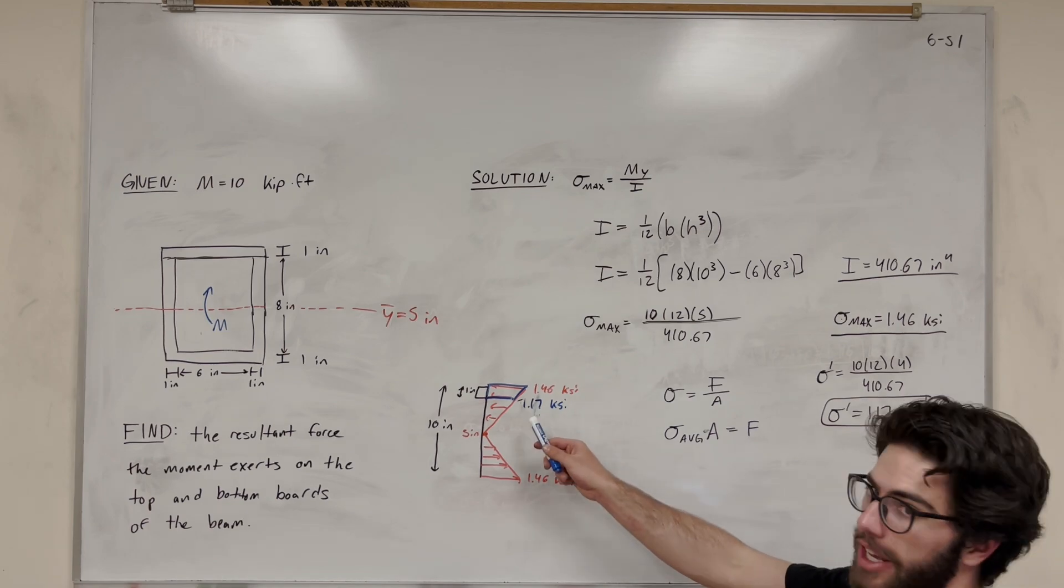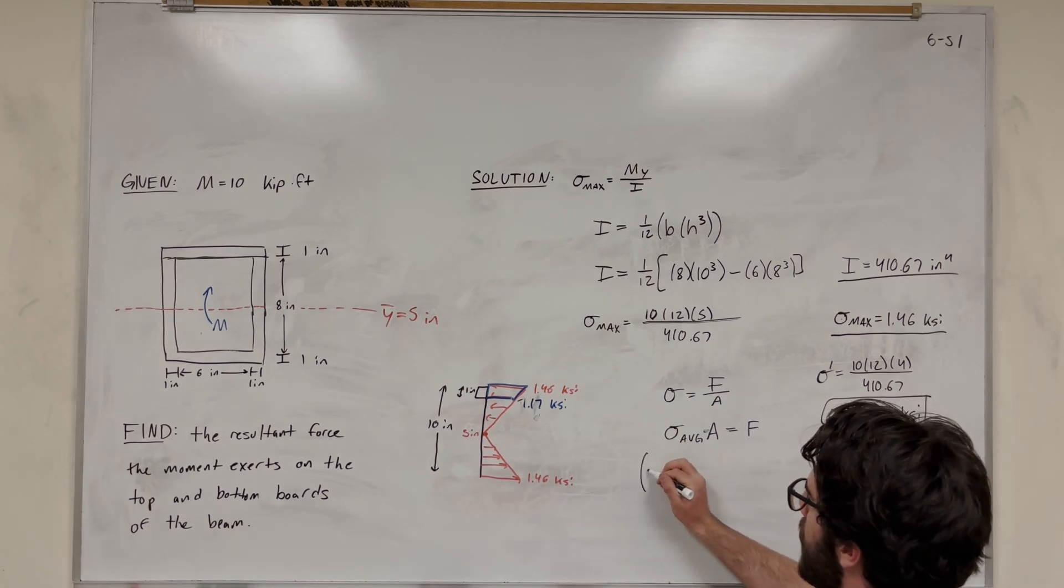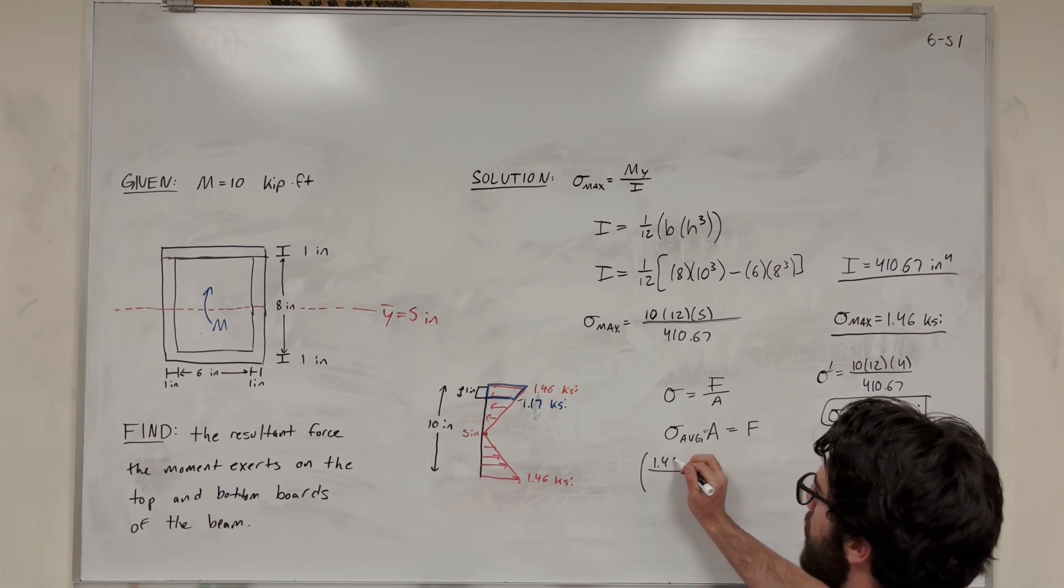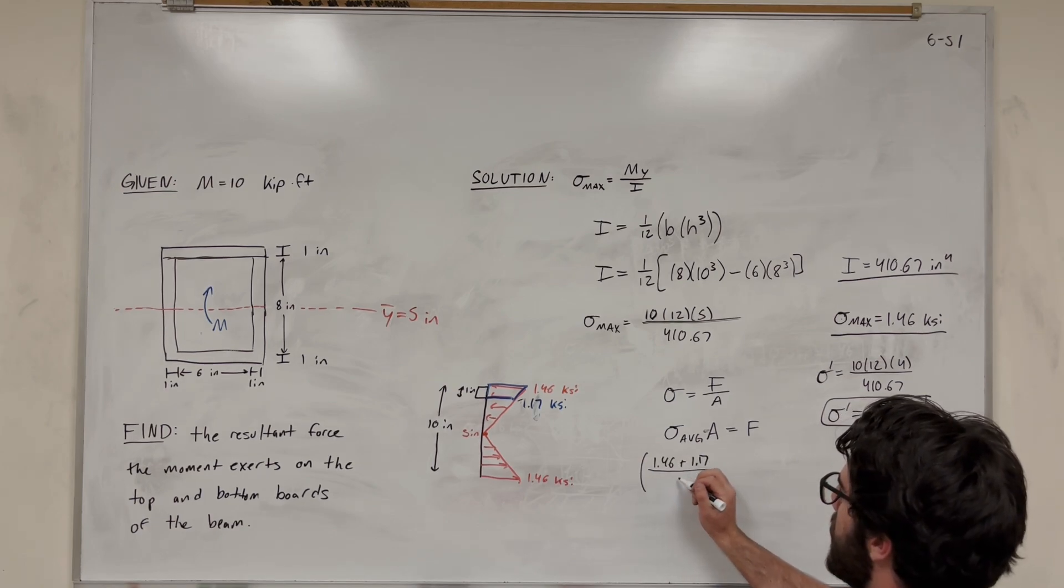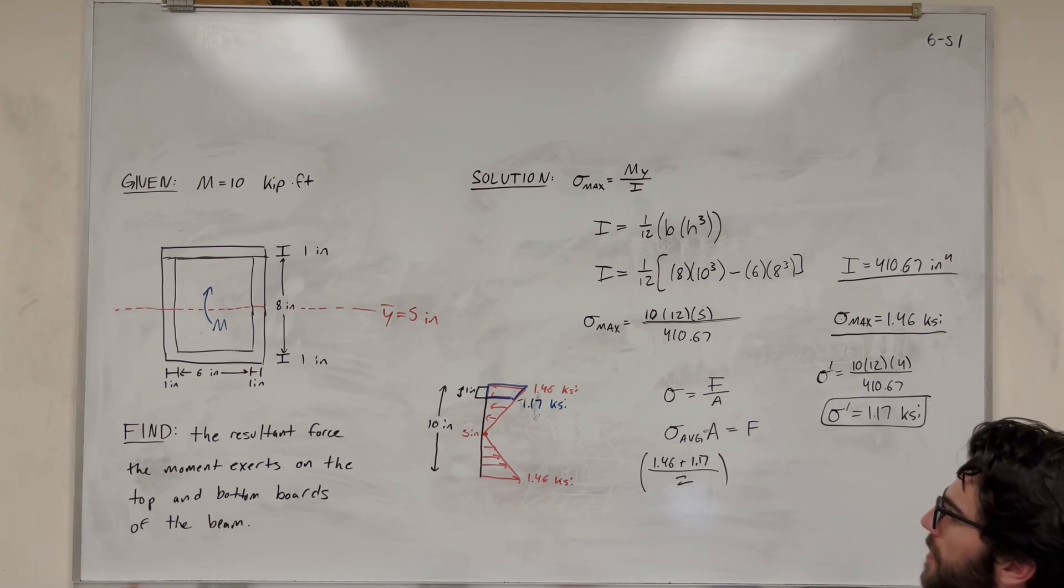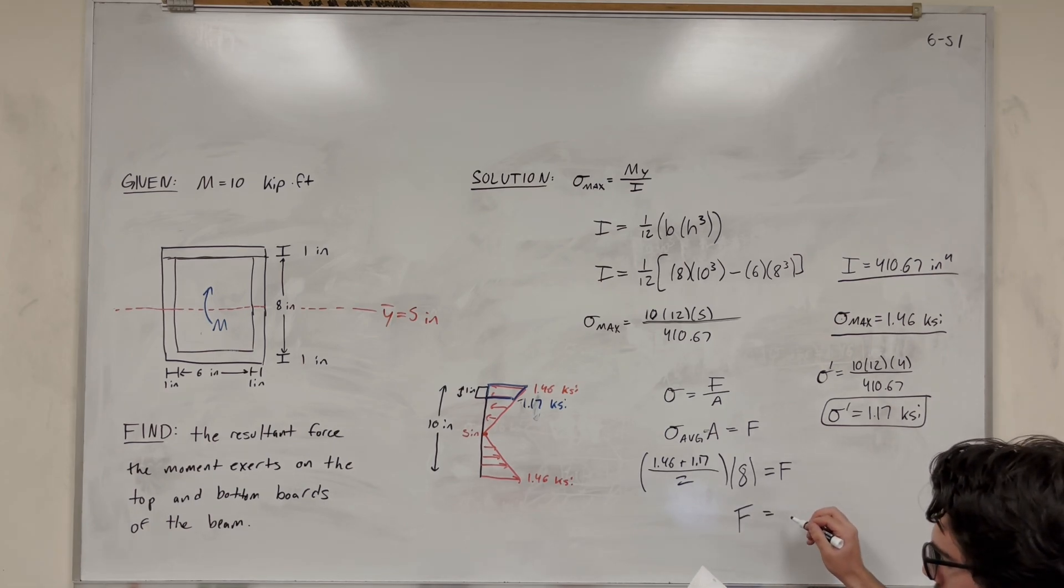Now we know that right here is 1.17 kSI. The average of these is just adding them up and dividing by 2. So 1.46 plus 1.17 divided by 2, that's the average. Then we have the area as 8 inches, and that equals force. Plug this in, you get that force equals 10.5 kip. And that's our final answer.